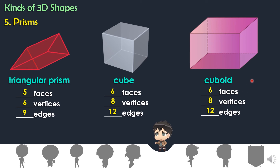Vertices: one, two, three, four, five, six, seven, eight. Cuboid has eight vertices. How about the edges? Let's count: one, two, three, four, five, six, seven, eight, nine, ten, eleven, twelve. Cuboid has twelve edges.